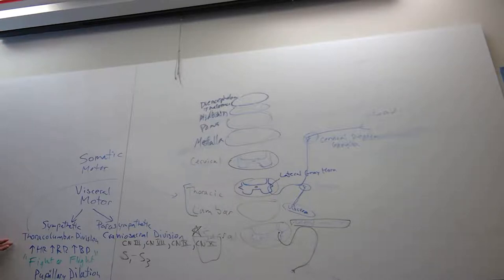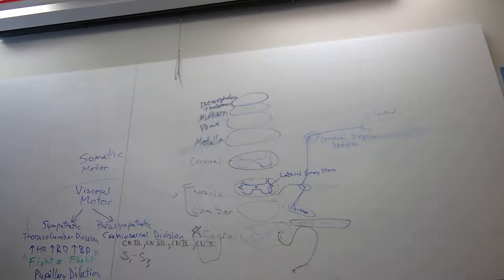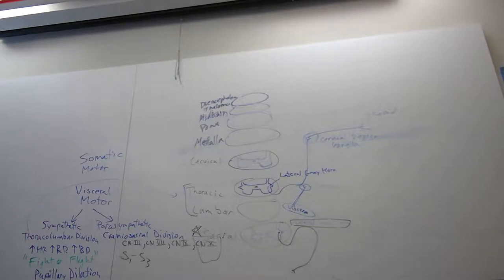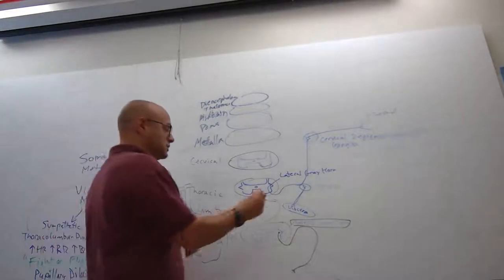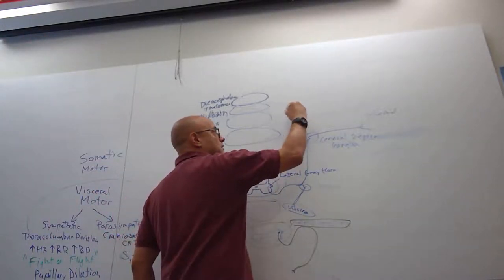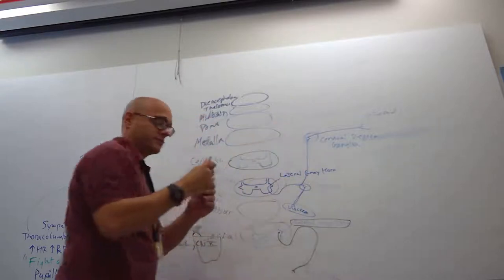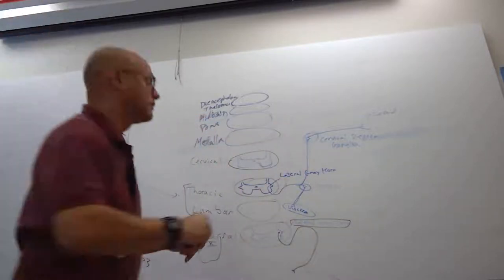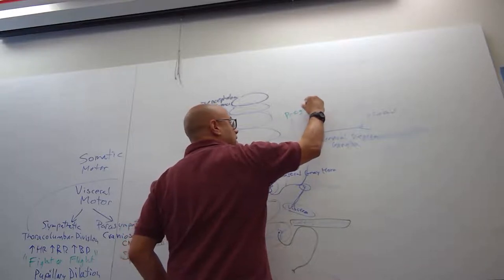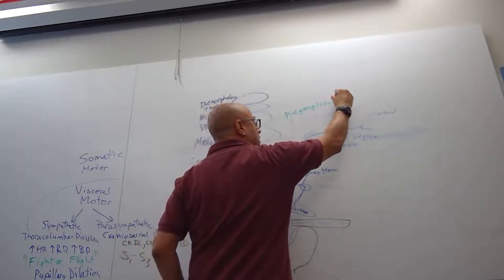You have sympathetic and parasympathetic. Sympathetic is thoracolumbar — why? Because the neurons that give rise to the original neurons, the first neurons — the preganglionic neurons — their cell bodies reside within the lateral gray horns of the thoracic and lumbar spinal cord.